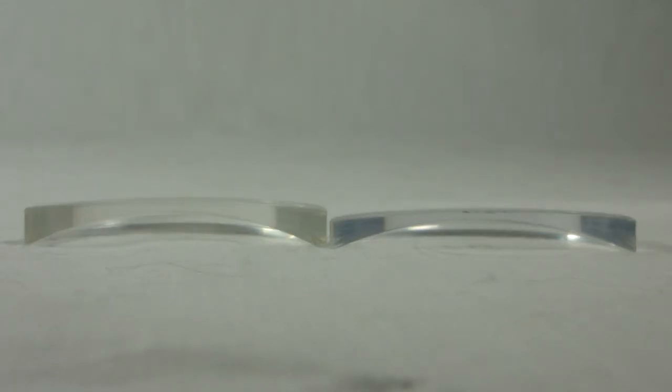All right, here we have on the right side our 156, which is considered a mid-index lens material, compared to our plastic lens on the left.